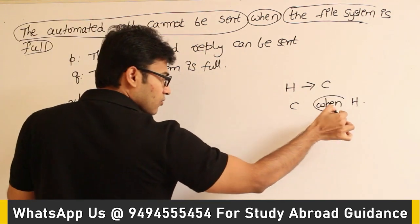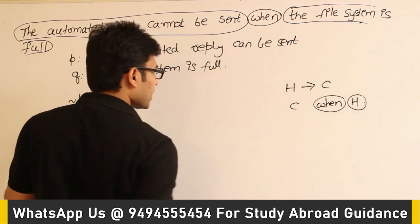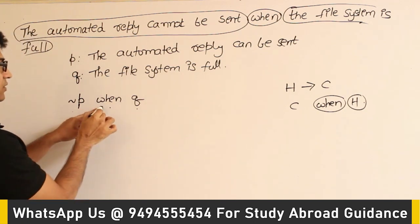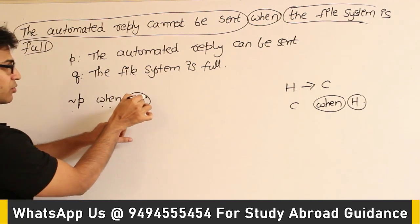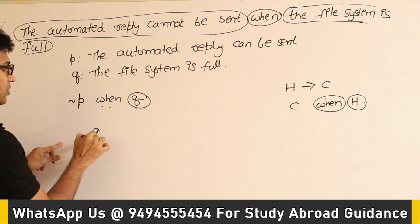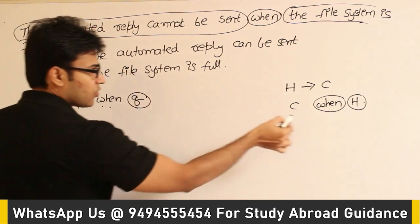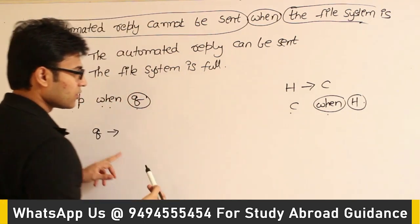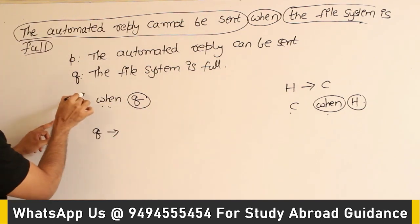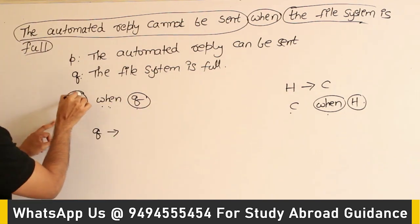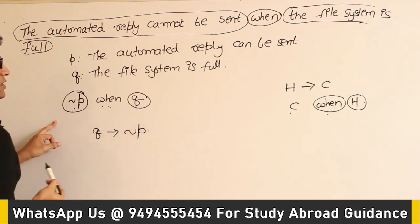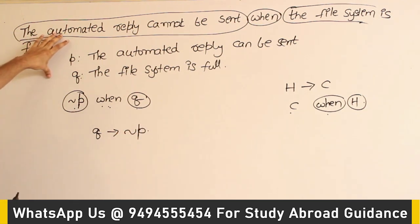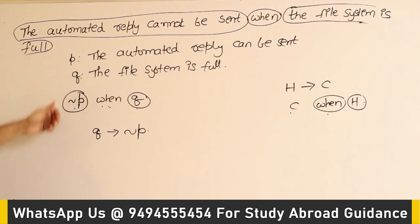After 'when,' whatever is present is going to be the hypothesis. Therefore, Q is going to be the hypothesis. So Q implies — and before 'when,' whatever is present is the conclusion. Before 'when,' what is present? Negation P. So negation P is going to be the conclusion. Identify the statements, identify the connectives, and then you can form the compound statement.